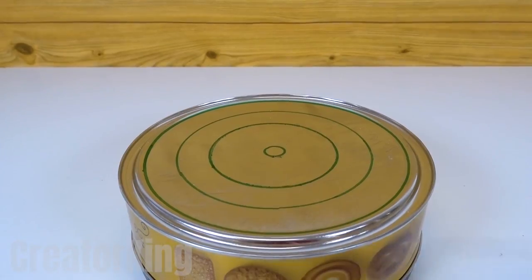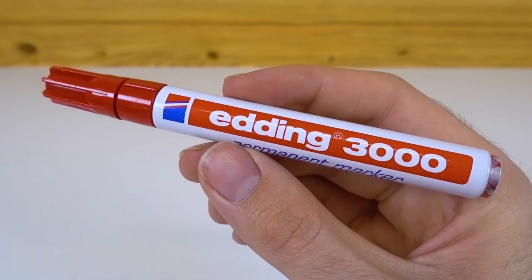Once all these circles are made, draw the sections of our future target with a red pen and a ruler.